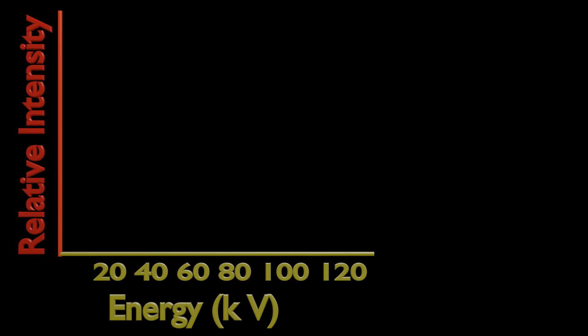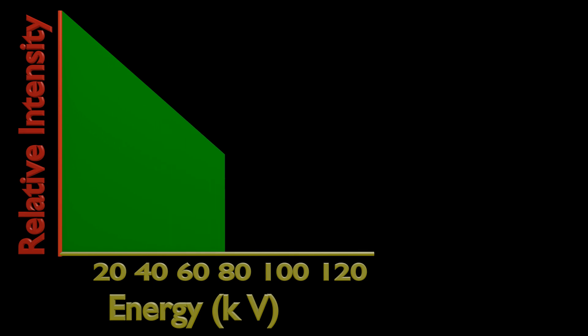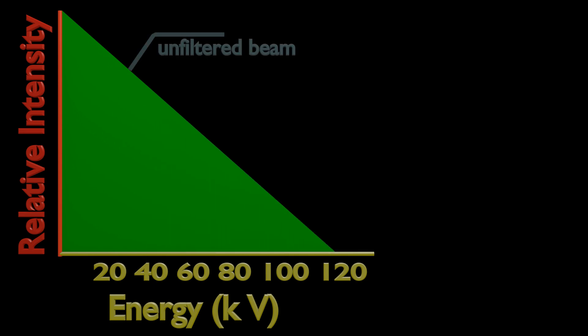Also, kinetic energy of electrons can be different due to previous interaction with a target atom. So Bremsstrahlung X-ray can have any energy between zero and a maximum.